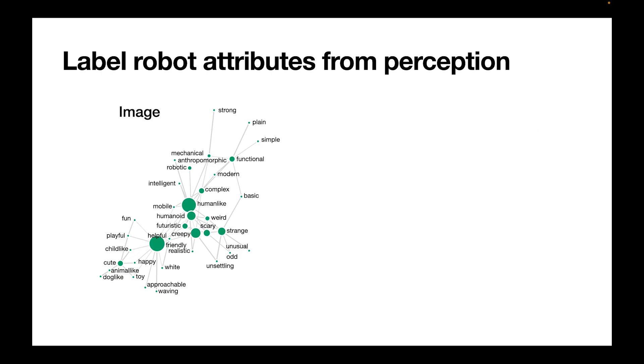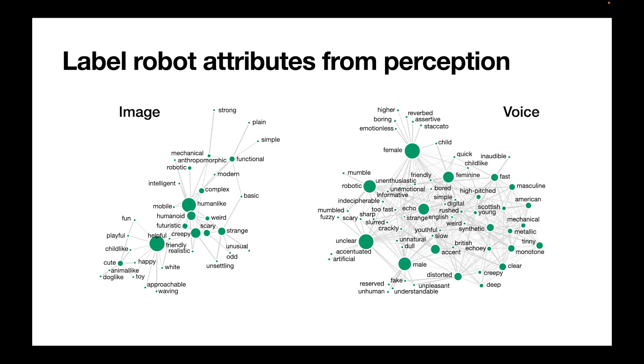From the open-ended labeling, we get pretty rich taxonomies for each of the modalities. So here you can see it for the images, and here you can see it for the voices.